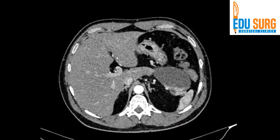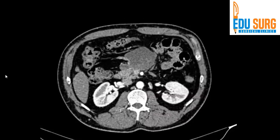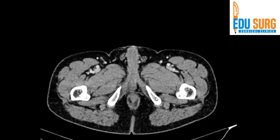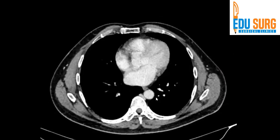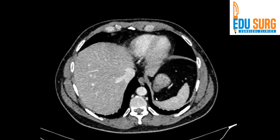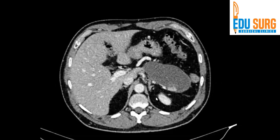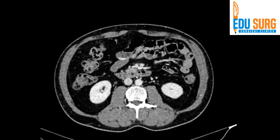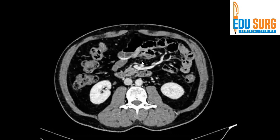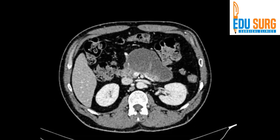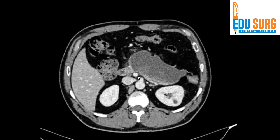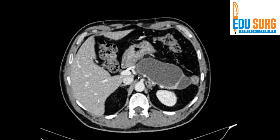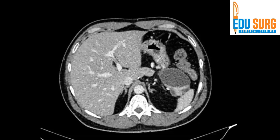So there are two separate collections — that is something you should know. Moving to the next interesting point: this is the portal venous phase. You can see the portal vein and the superior mesenteric vein. That is the superior mesenteric vein and that is the portal vein.